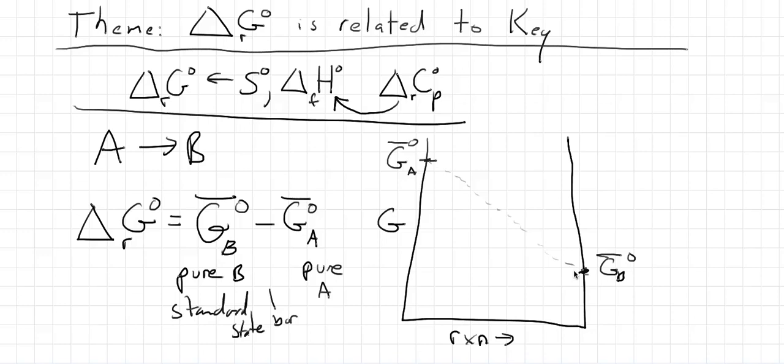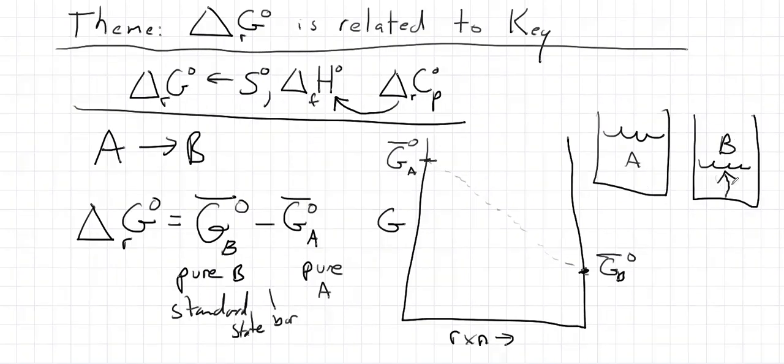If we think about the picture that would go with this, it would be we start off with a beaker of pure A, and we have an empty beaker, and as the reaction progresses B would just start filling up this beaker. Well, that's not how we do reactions, right? We don't have stuff being just sort of appearing in a second beaker.